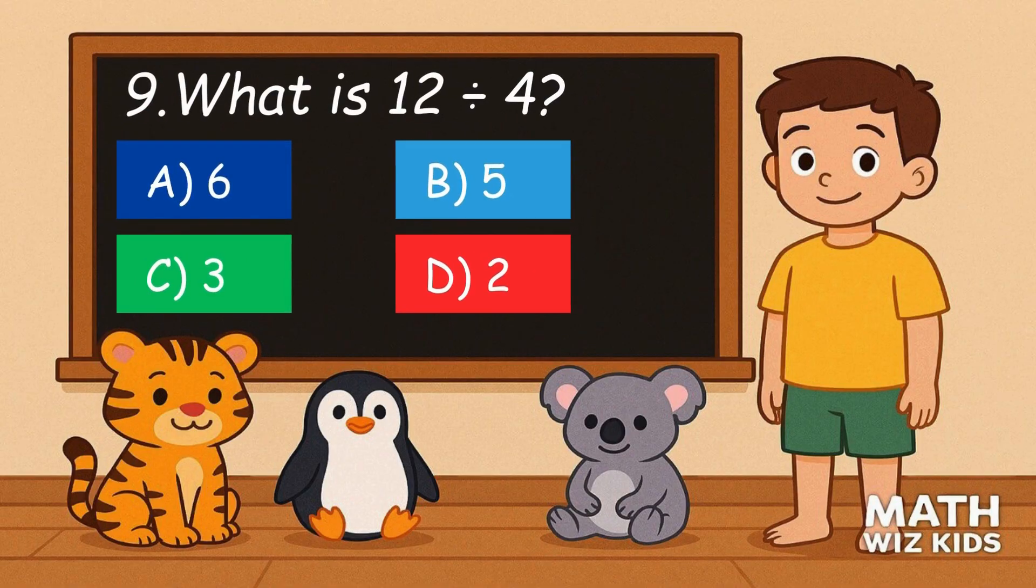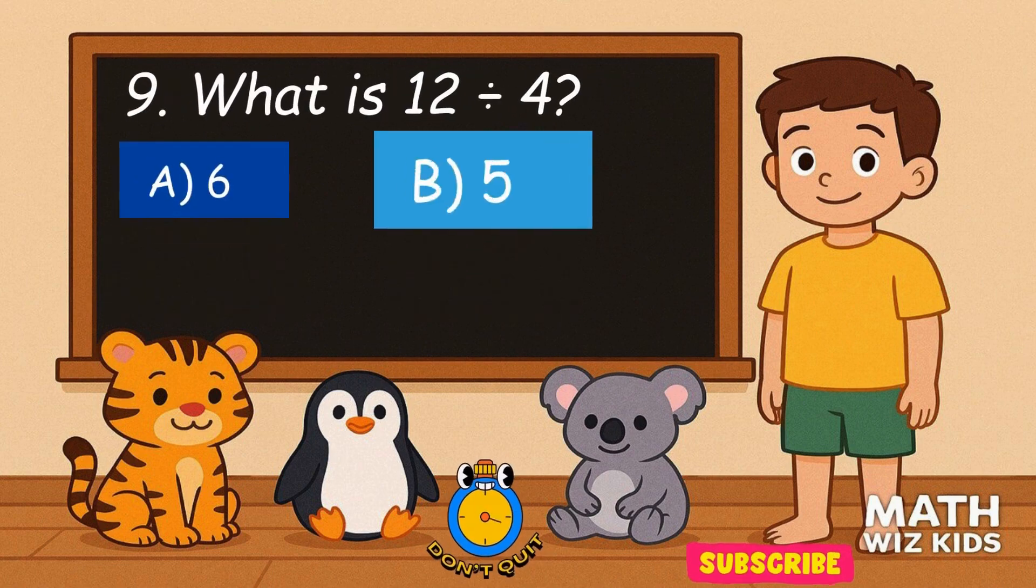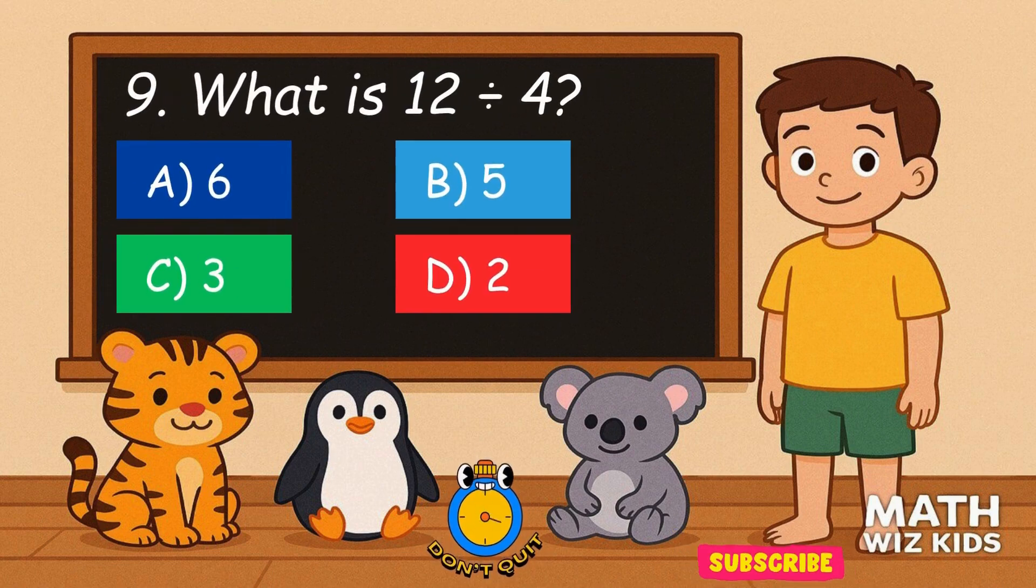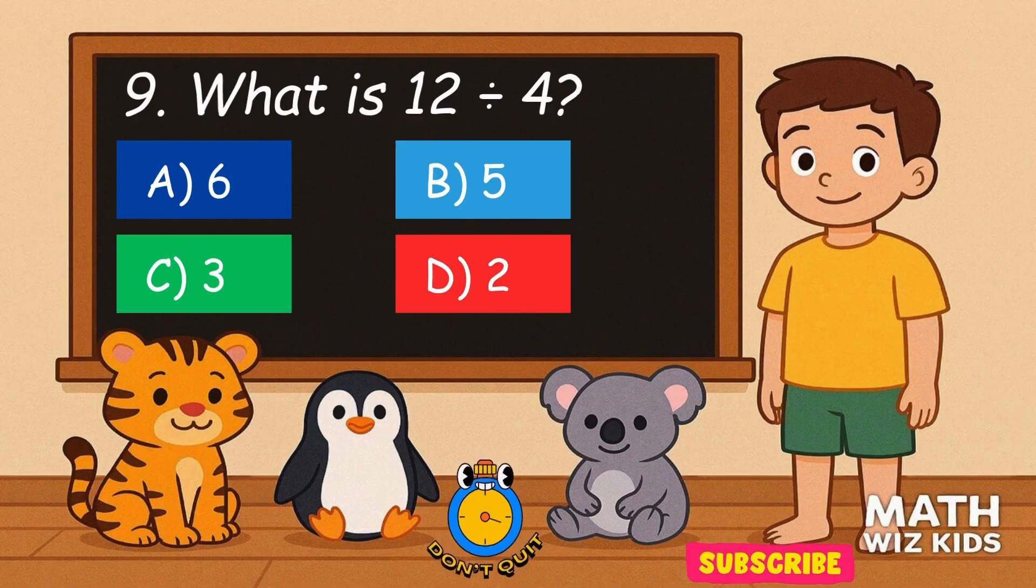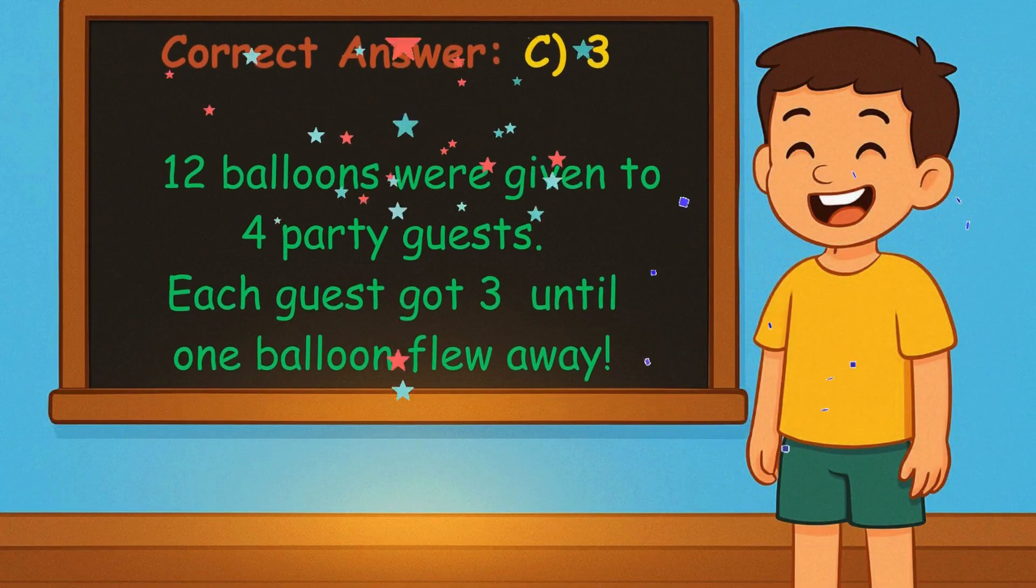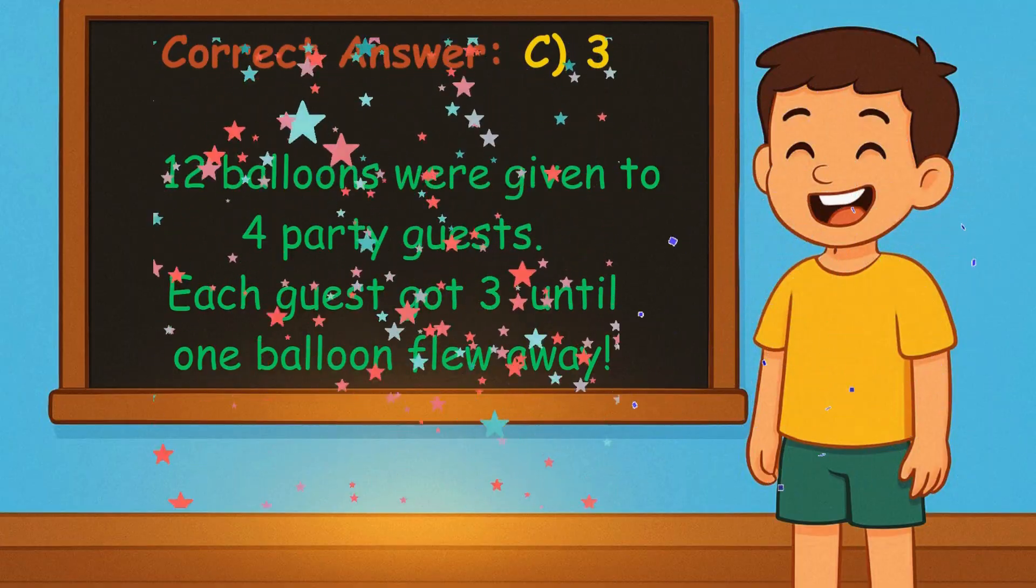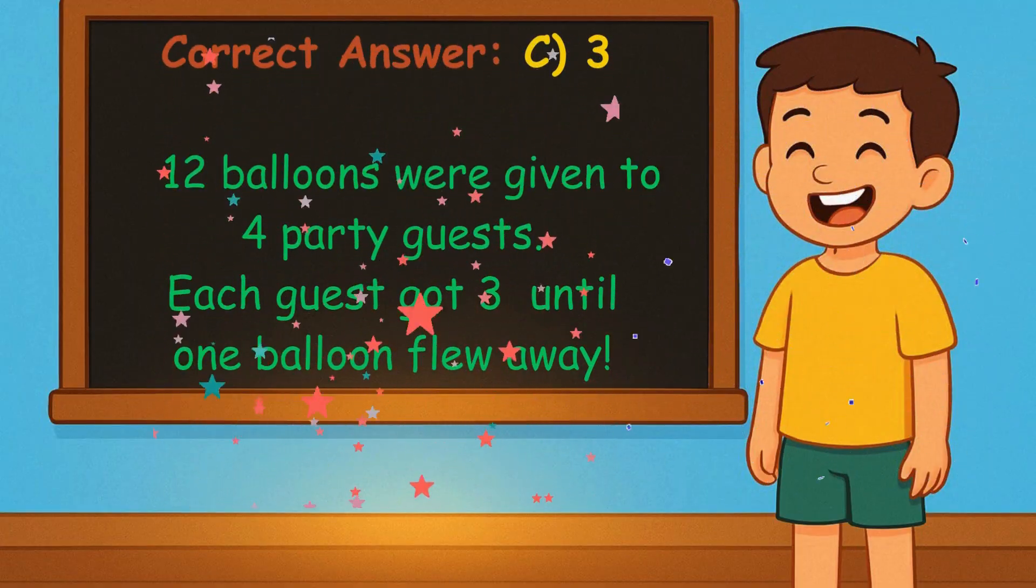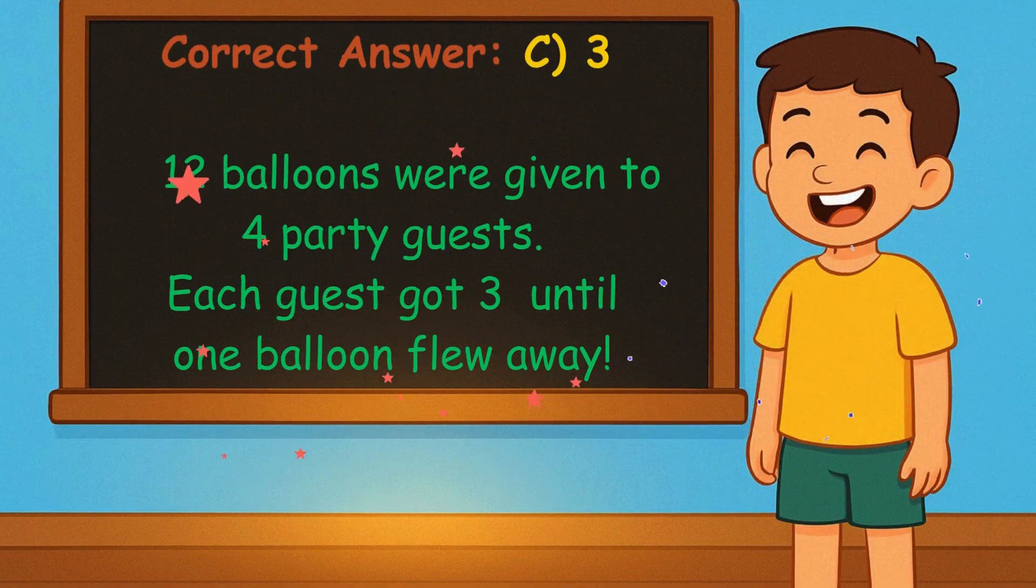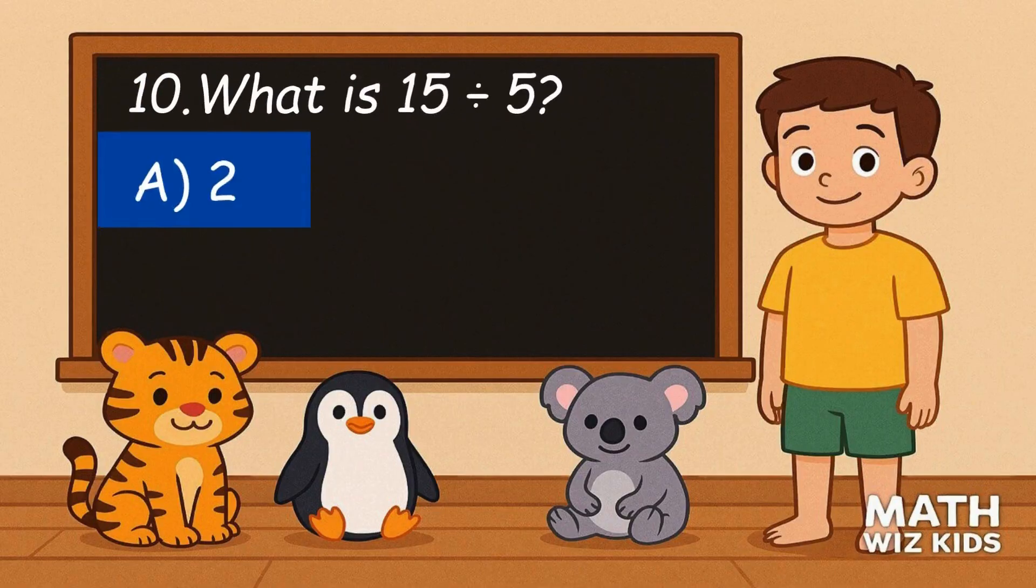9. What is 12 divided by 4? Is it A, 6, B, 5, C, 3, or D, 2? Correct answer is 3. Twelve balloons were given to four party guests. Each guest got 3 until one balloon flew away.